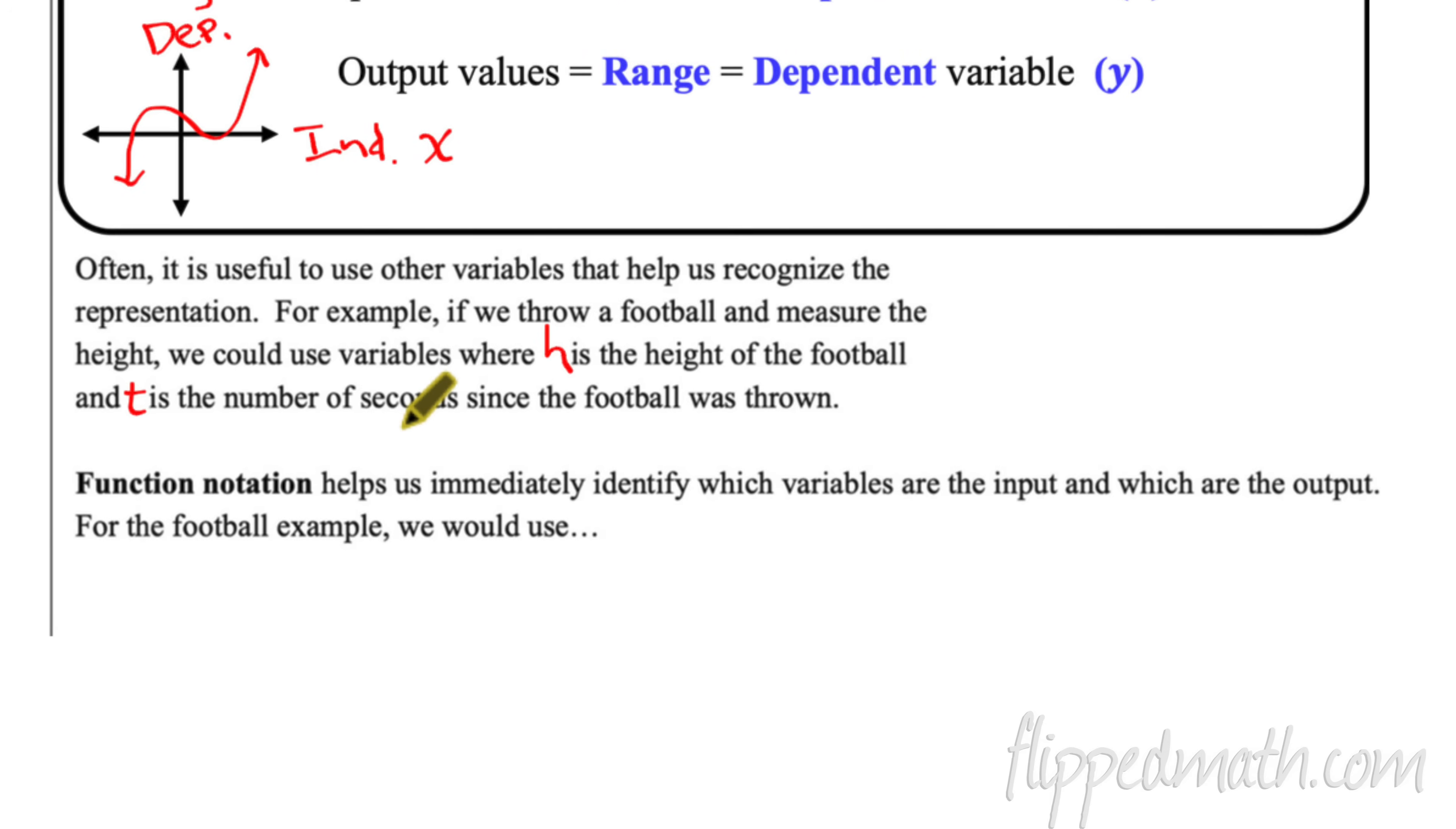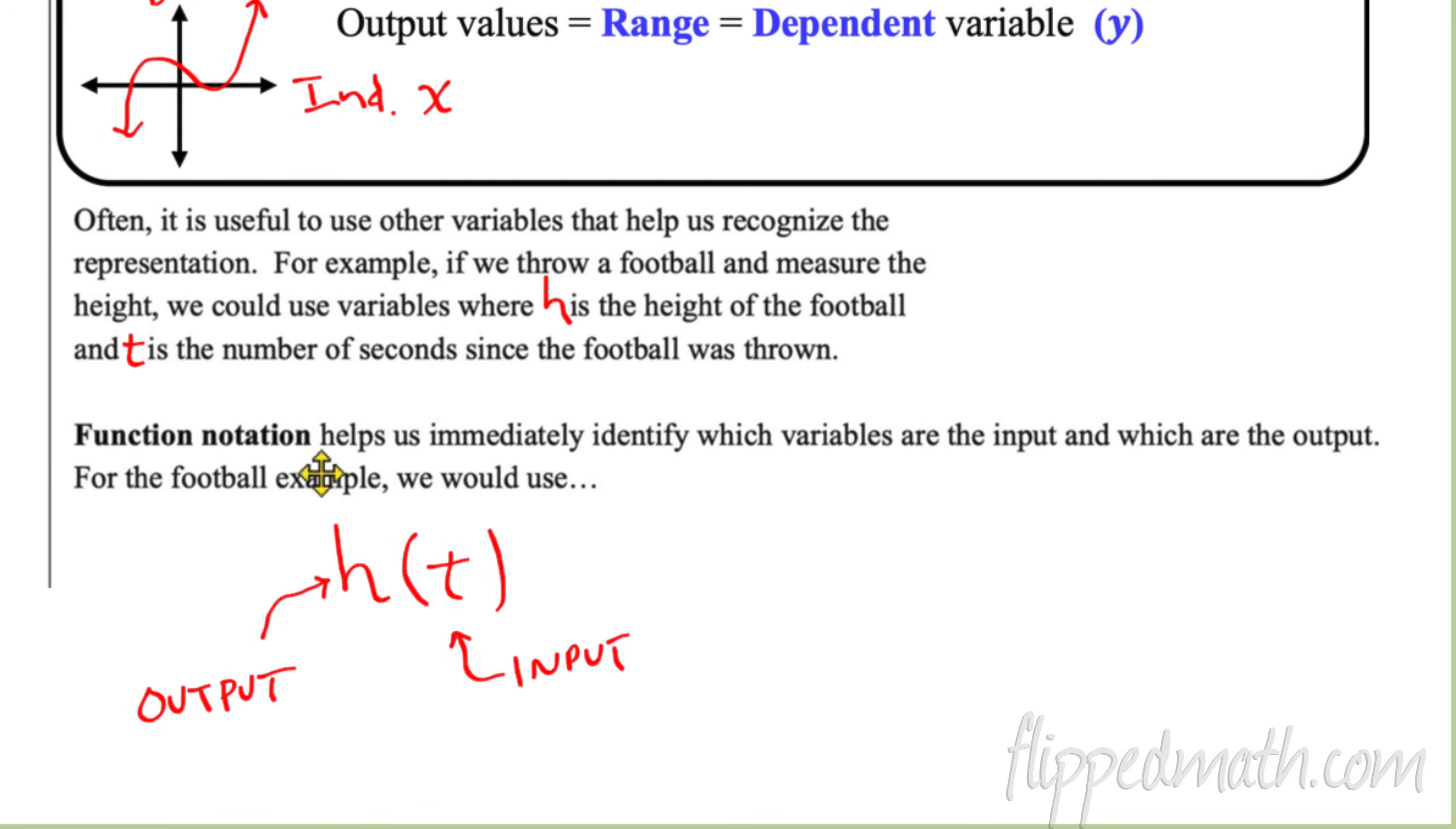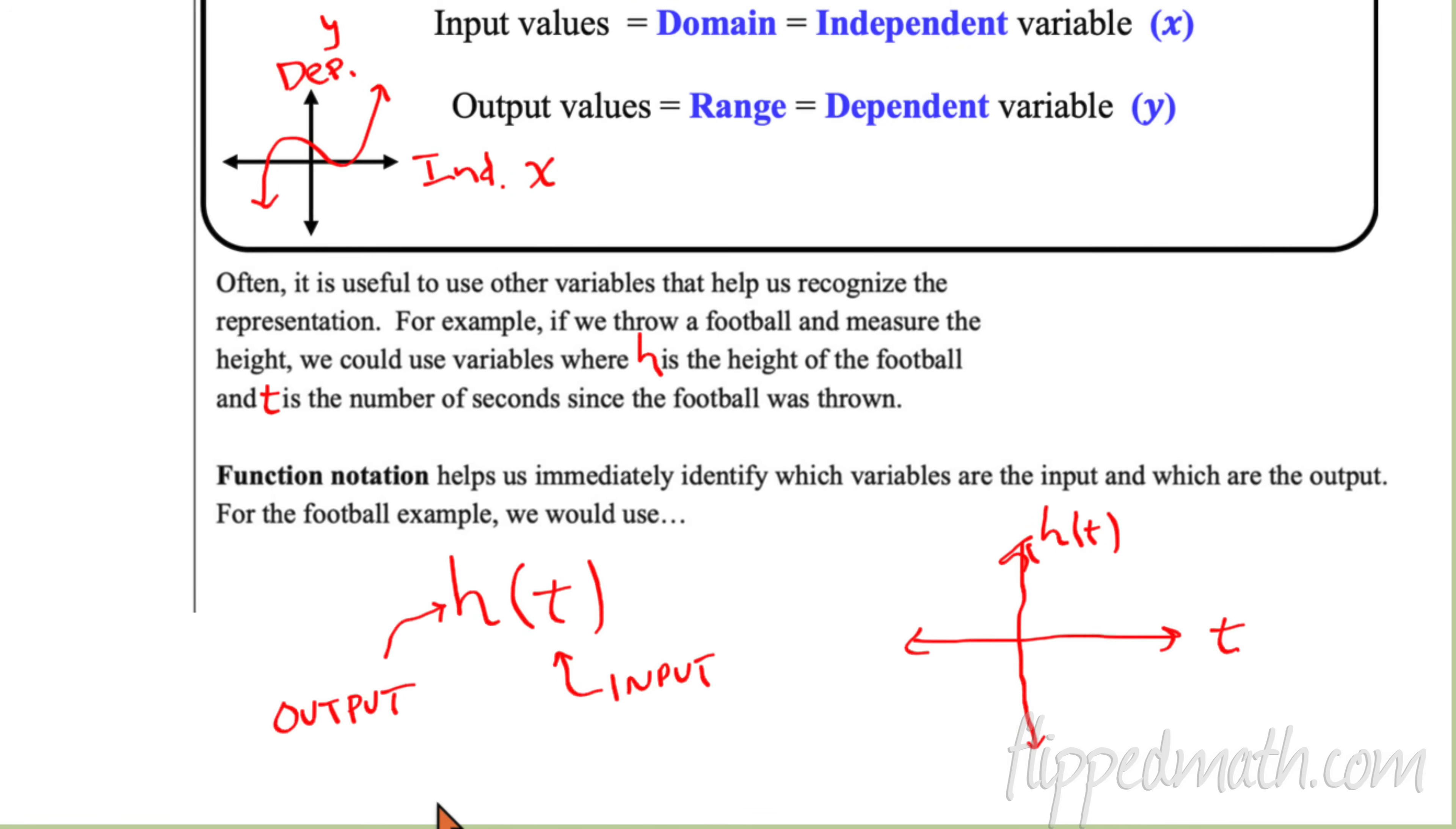And if we want to use function notation using our defined variables, then T would be the input, so it goes inside the parentheses and H would be the output. And we could also use the words domain and range, independent variable, dependent variable, et cetera. How would I draw this on a set of axes? Well, just like we use X and Y, you've done this before. We want to put the input on the horizontal axis, so we put T here. That would stand for time. And then the output would be H of T. And that stands for the height. So we have our two variables, we have T and we have H, and H of T represents the function where there's some relationship between the two.